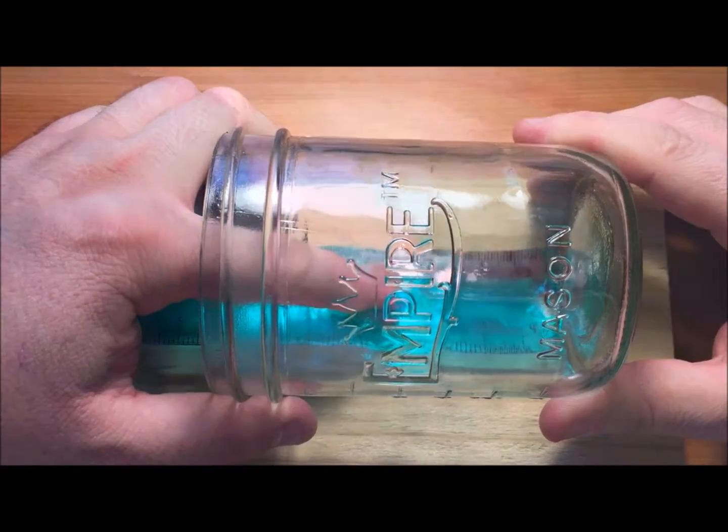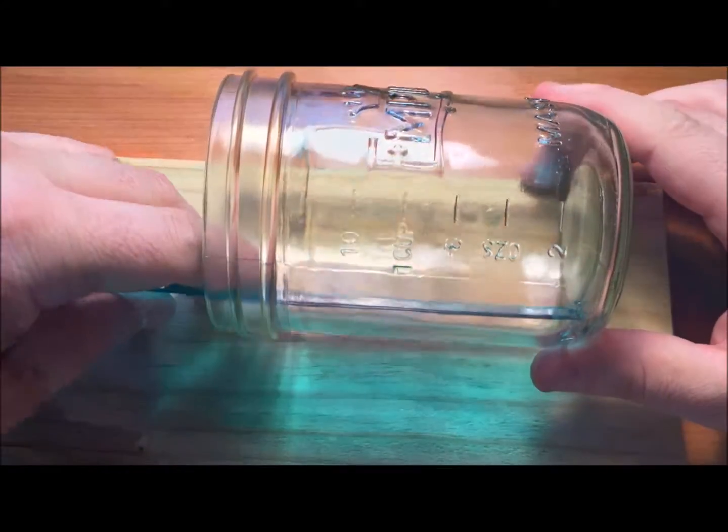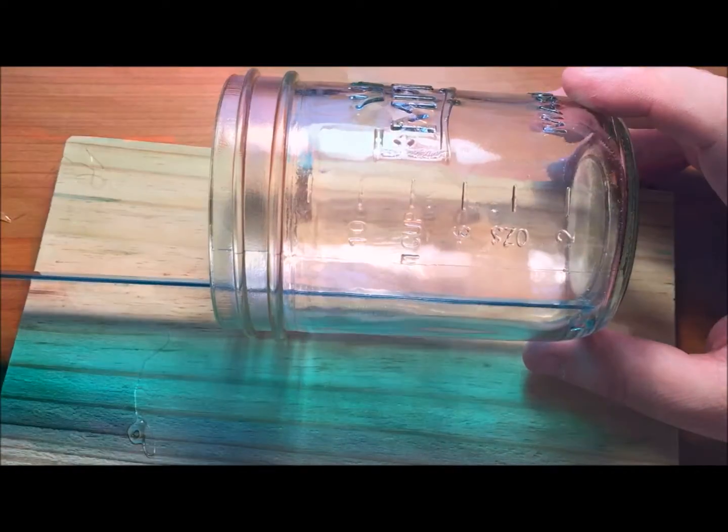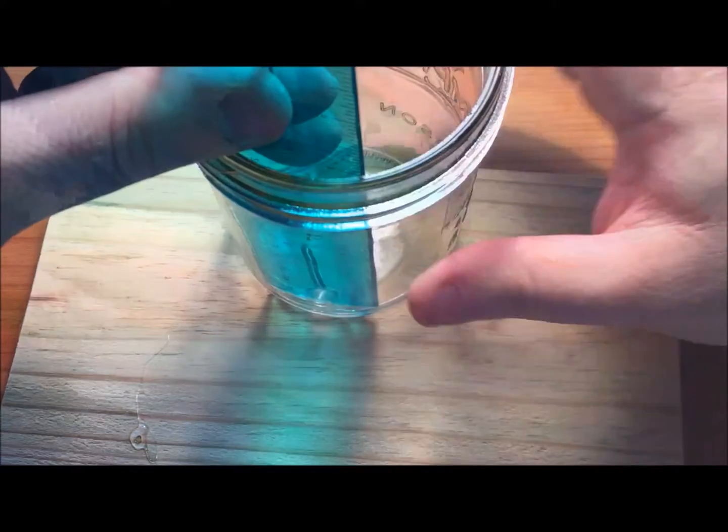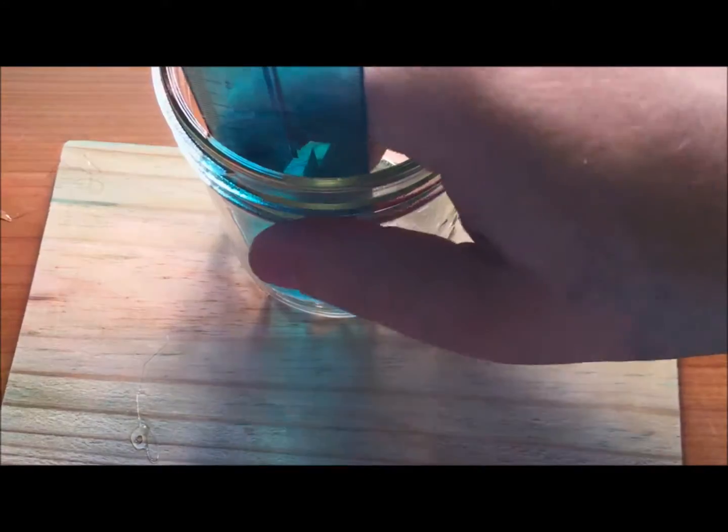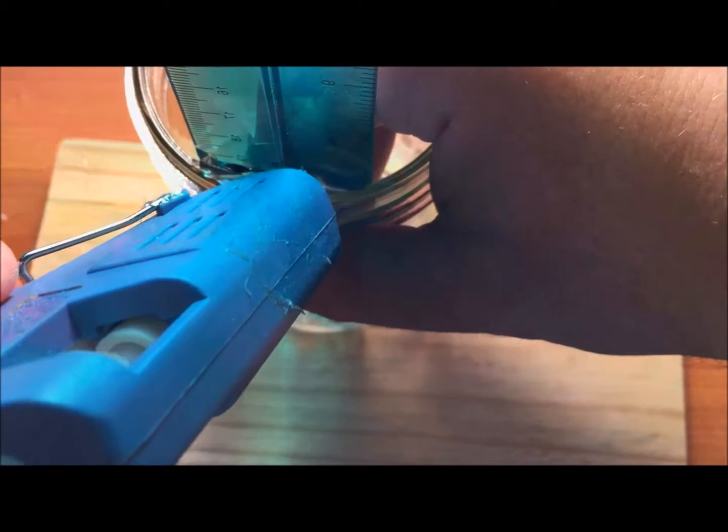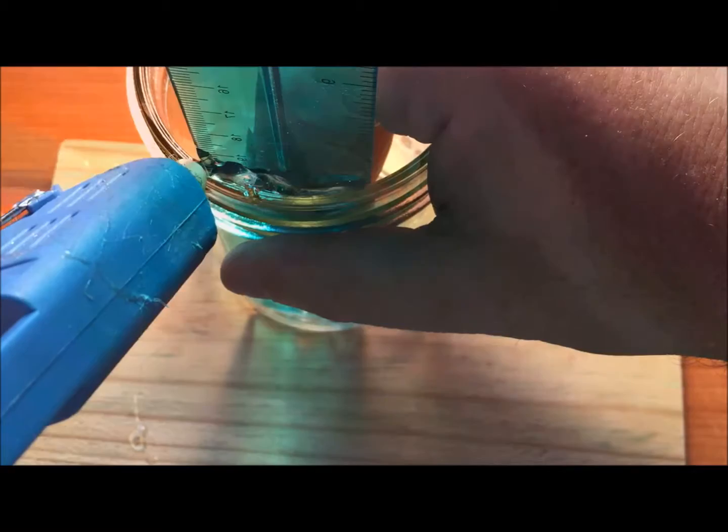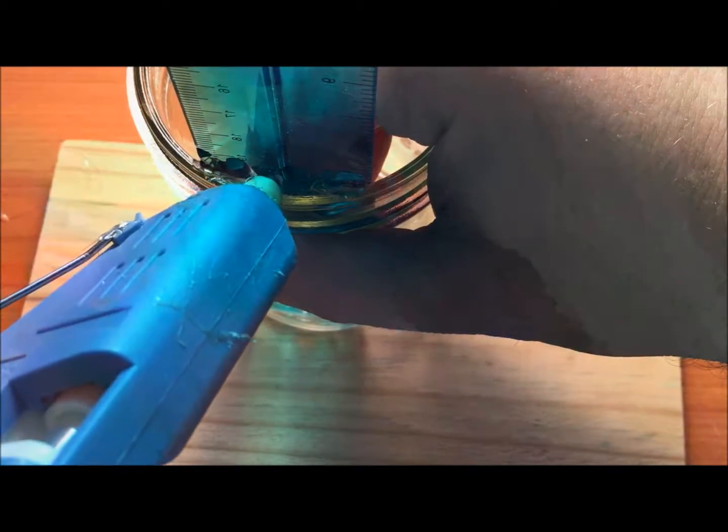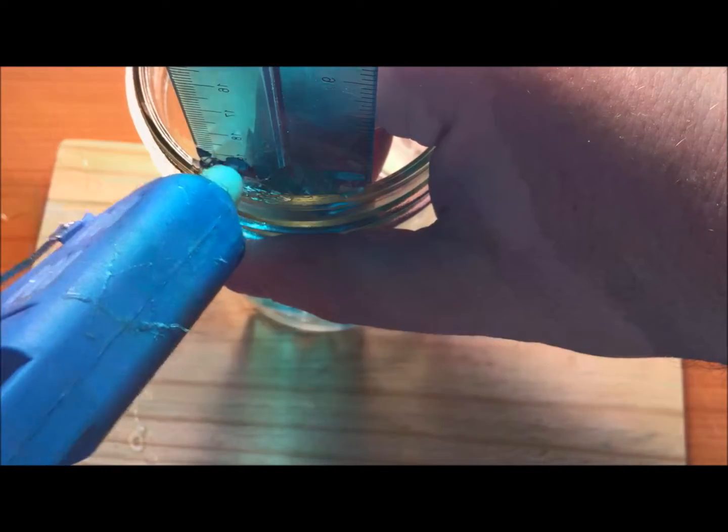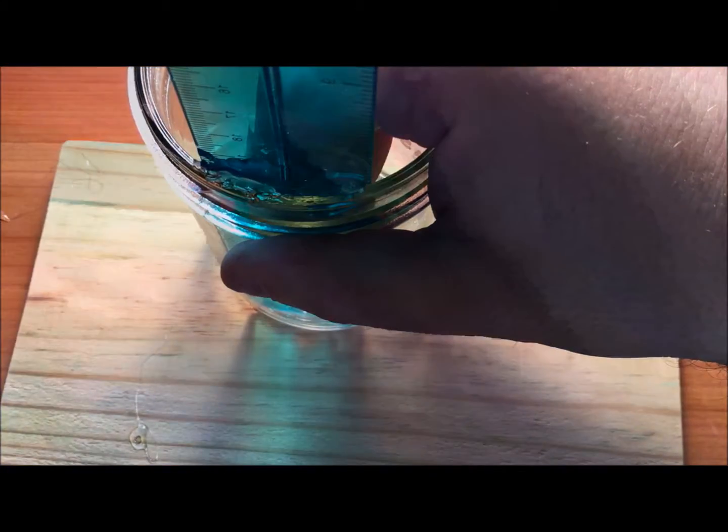I've now got the glue securing the ruler to the bottom of the mason jar. Now I'm going to flip things over and put a little more glue in the back here to hold the ruler onto the mason jar. It's okay if it runs down a little bit. That's actually better because it will hold things in place. The jar is relatively cool, so the glue should set up almost the moment it hits the jar.